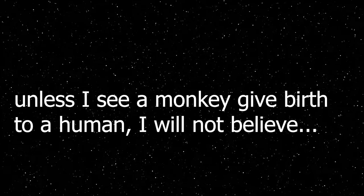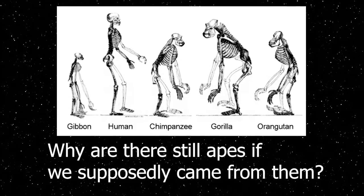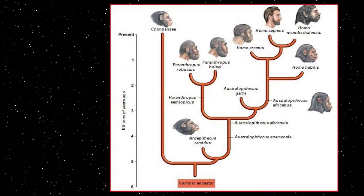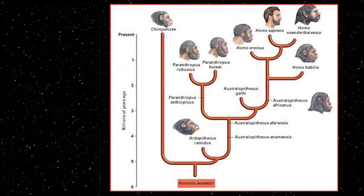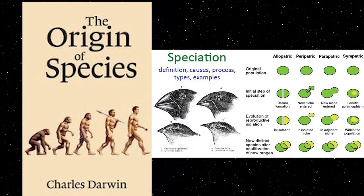I have heard creationists mock evolution by saying, unless I see a monkey give birth to a human in a zoo, I will not believe in evolution. Another question — a valid one — asks, why are there still monkeys if we came from monkeys? Let me explain. Humans and modern apes come from a common ancestor. Instead of humans evolving from modern apes, the apes we have today are not really the same as 100,000 years ago or before the dawn of modern humans. Despite chimpanzees and humans being cousins sharing a lot of DNA, humans did not come from chimpanzees. Your cousin is related to you, but you didn't come from your cousin. In Charles Darwin's book, The Origin of Species, he mentions speciation, where one organism branches off from another, best seen in phylogenetic charts.